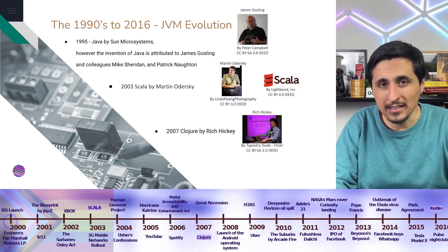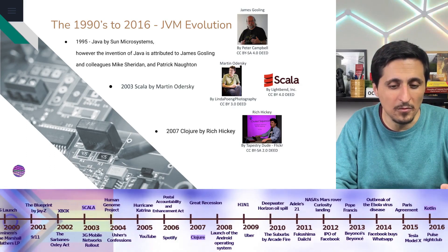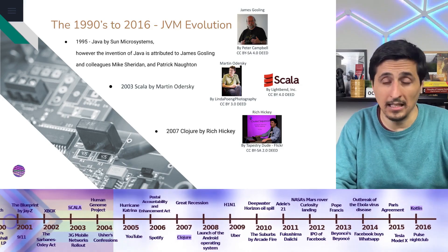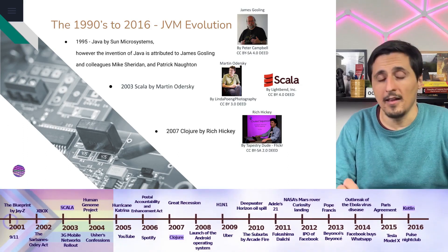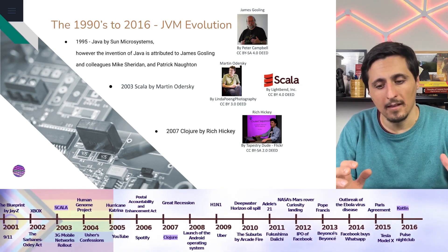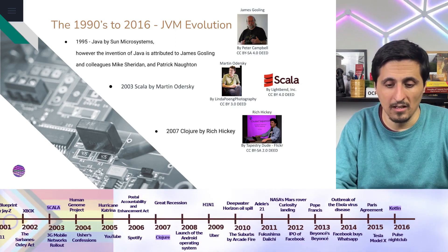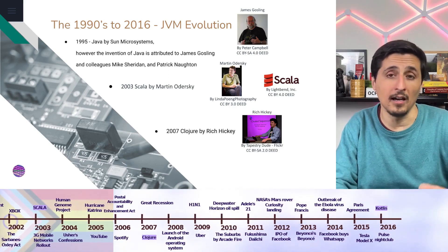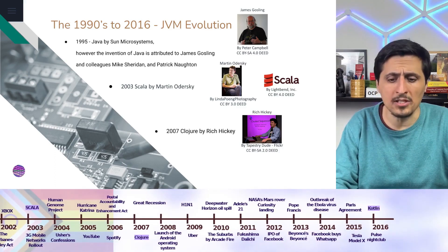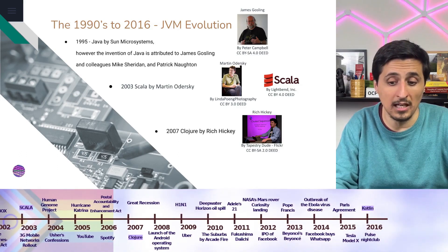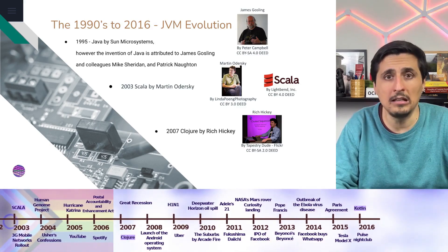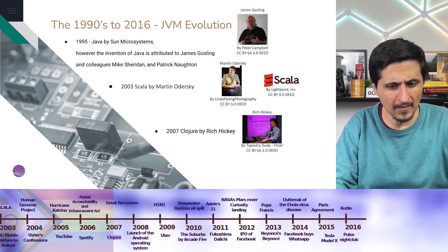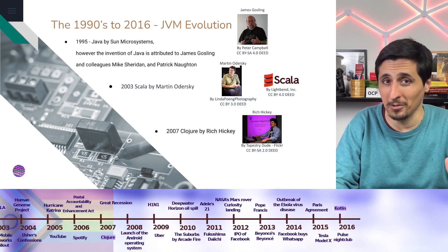Clojure unfortunately found even less success than Scala, because people were getting used to high-level languages. There was something about Clojure — the way it works, similar to Lisp and Scheme — that isn't very appealing for the average developer. It became a bit of a niche market for people that really enjoyed that language. Another language worth mentioning is Groovy, a scripting language that can also run inside the JVM and is used by testing frameworks like Spock. However, Groovy is not discussed here in depth because the focus is on recursivity.